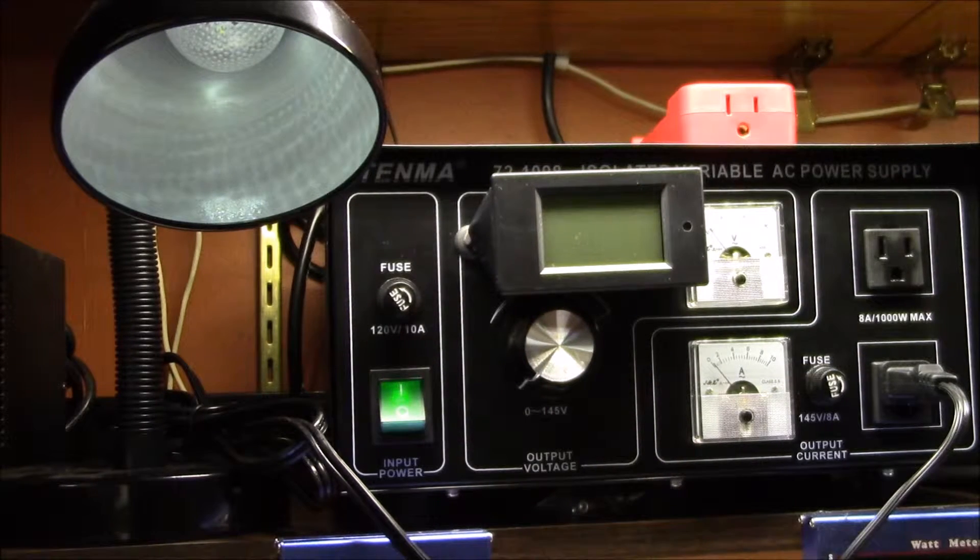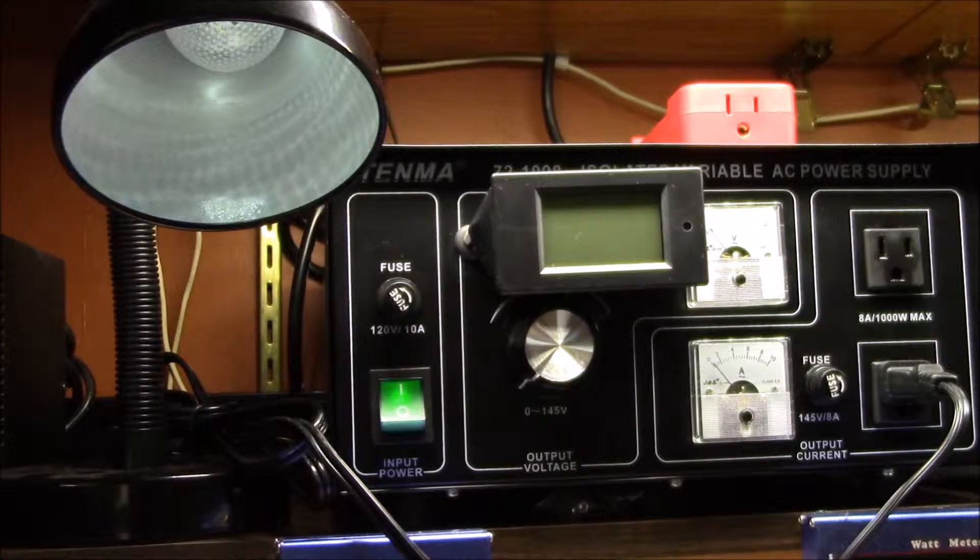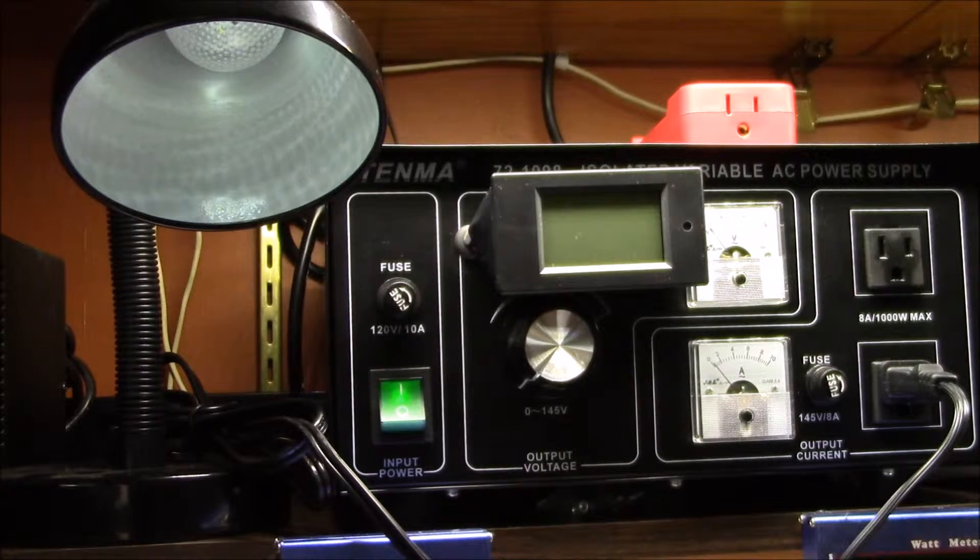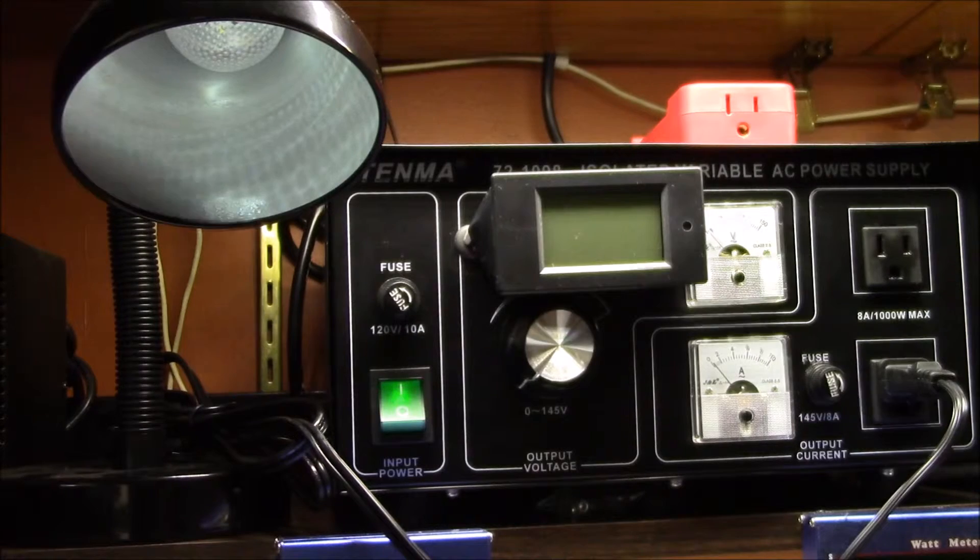So it turns out this bulb uses a capacitive dropper driver circuit. And this is where a capacitor is used to create a voltage drop and limit the current for the LEDs without producing lots of heat. It acts almost like a resistor. And that's what's shown by this linear current and voltage relationship. BigClive.com has some good videos on capacitive dropper drivers and LED lamps. Links in the upper right corner of the video and in the video description. Off screen, I measured the bulb's power factor at 0.6. This is rather low due to being mostly a capacitive load.